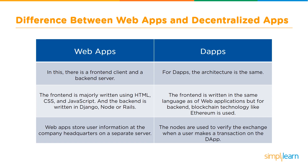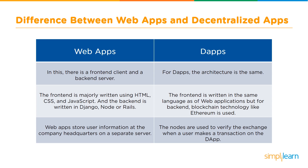In both web apps and dApps, they interact with each other using JSON messages. Web apps store user information at the company headquarters on a separate server. However, in dApps, data is created by the users and nodes are used to verify the exchange when a user makes a transaction on the dApp.